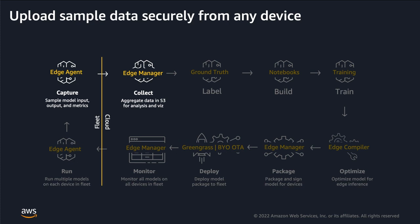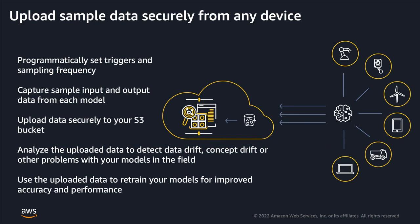You can also use this data to conduct your own analysis, such as model drift analysis. The application on the Edge device decides when to capture and what data to capture. It then sends a capture request to the Edge agent. For example, you can decide to capture periodically, let's say every hour or once a day, on specific triggers like the confidence score of a prediction being repeatedly low.